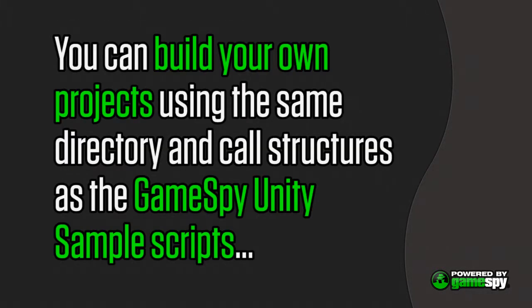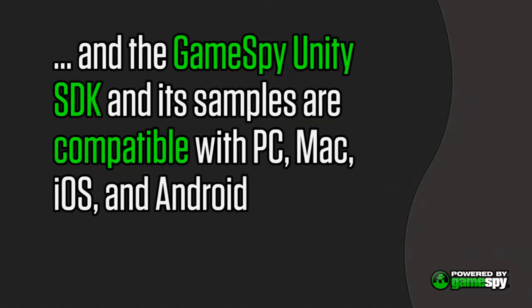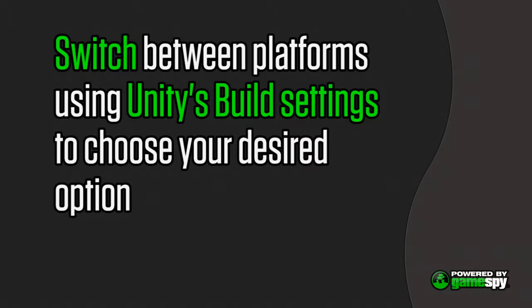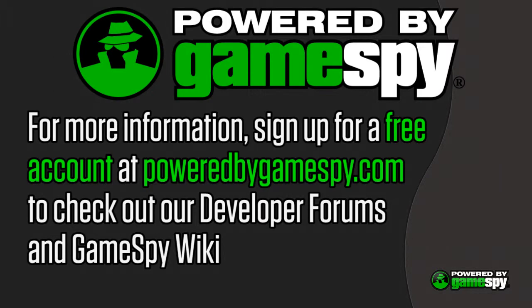You have now successfully installed and run the GameSpy Unity SDK samples. You can build your own projects using the same directory and call structures as the GameSpy Unity sample scripts. The Unity SDK, along with its samples, is compatible with PC, Mac, iOS, and Android. Simply switch the platform under Unity's build settings to the one that you want to use.